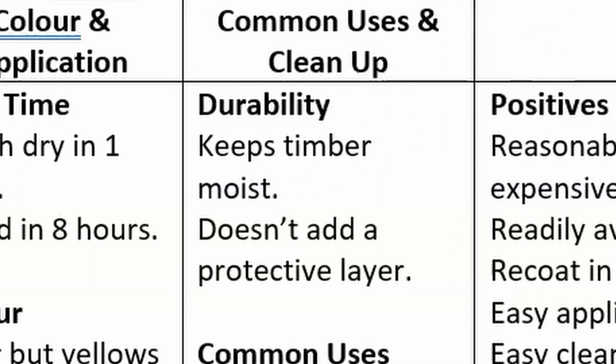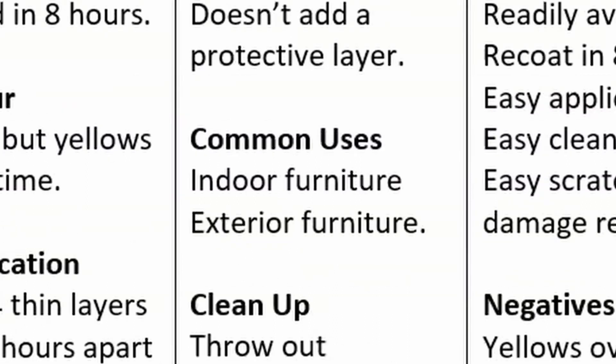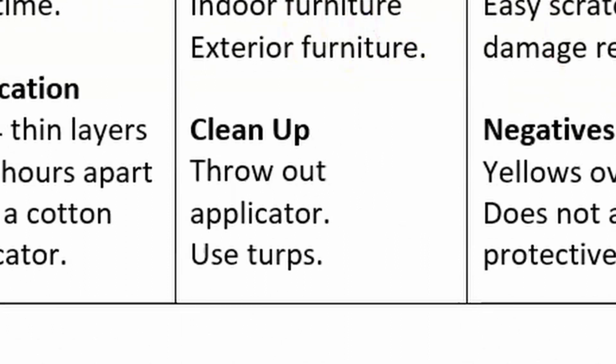Durability — we often talk about a few different things in this section: whether it keeps the timber moist so it doesn't crack, and also whether it adds a protective layer. If it adds a protective layer, state it because that is a beneficial quality. Common uses — is it used indoors or outdoors, and in what other areas of timber or furniture making? And then of course, cleanup — how do you clean this up? For example, with Danish Oil you throw out the applicator or rag and use turps to clean off other surfaces.